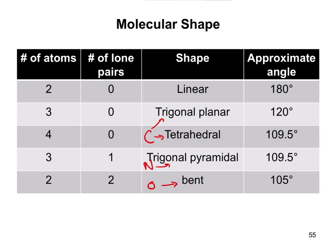A lot of times people will confuse bent and linear because they'll forget about the lone pairs. But, again, memorize this table, understand this chart. You should be good to go in terms of molecular shape.